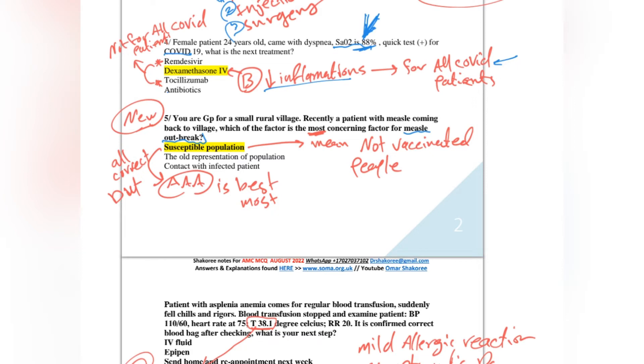Look, susceptible population - yes. Old representation of population - also yes. Contact with infected patient - always concerning you for measles outbreak. But the main, all are correct, but the most concerning one is susceptible population. This means the people who are not vaccinated in this society. So people who are not vaccinated are the main concerning factor for measles outbreak.